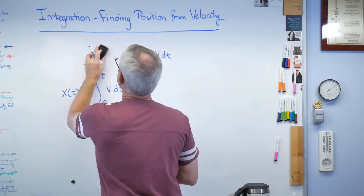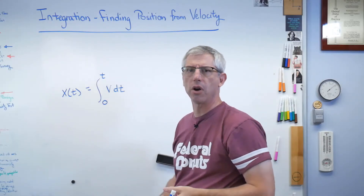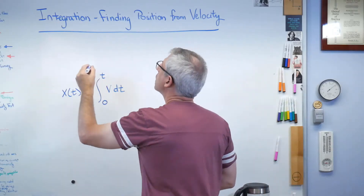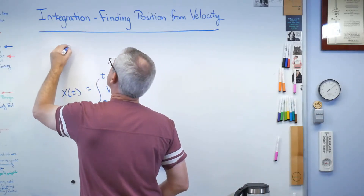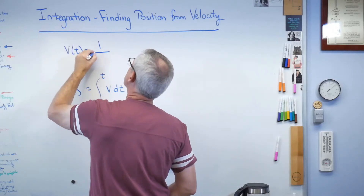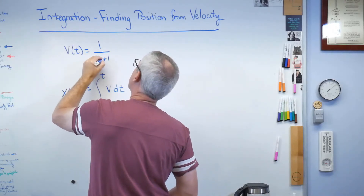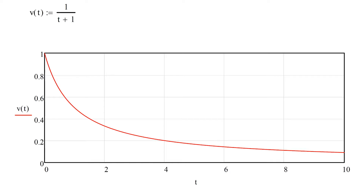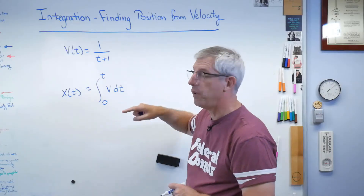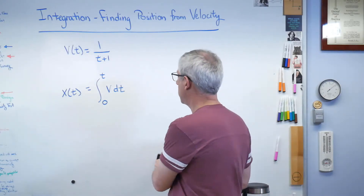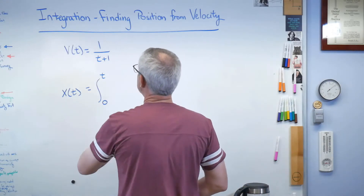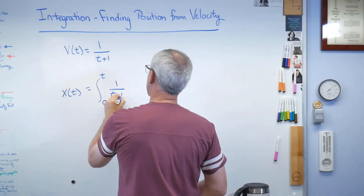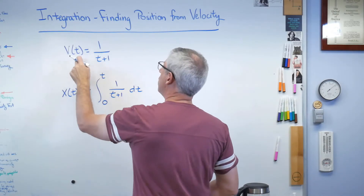So let's, for example, say that we were observing a cart — maybe there's an automated factory or something and I've got an object moving. Let's say that velocity as a function of time is 1 over t plus 1. And if you want to know what that looks like, here's a plot. You can see the velocity decreases over time, so it's braking, it's decelerating. So if I want to figure out how far the object has traveled over that time, all I've got to do is this — let's plug in v of t in there.